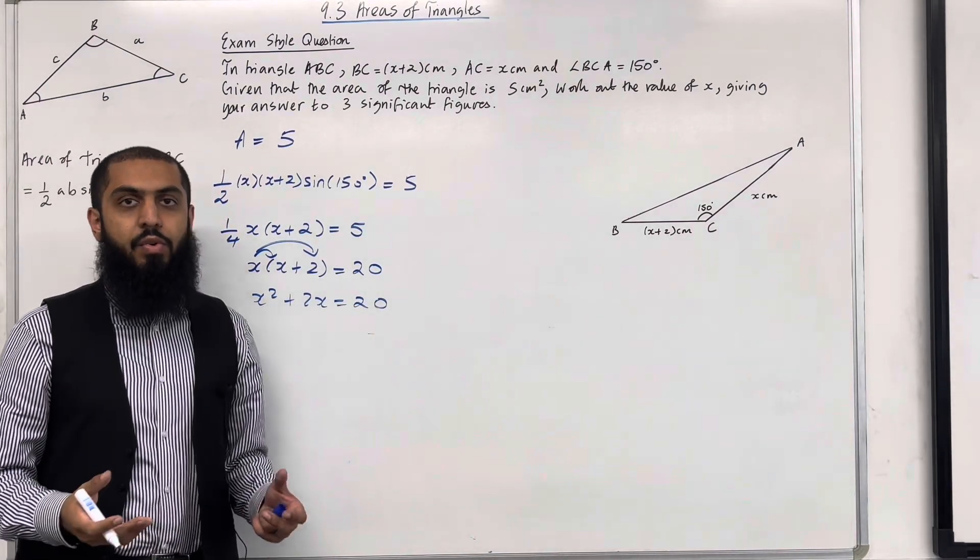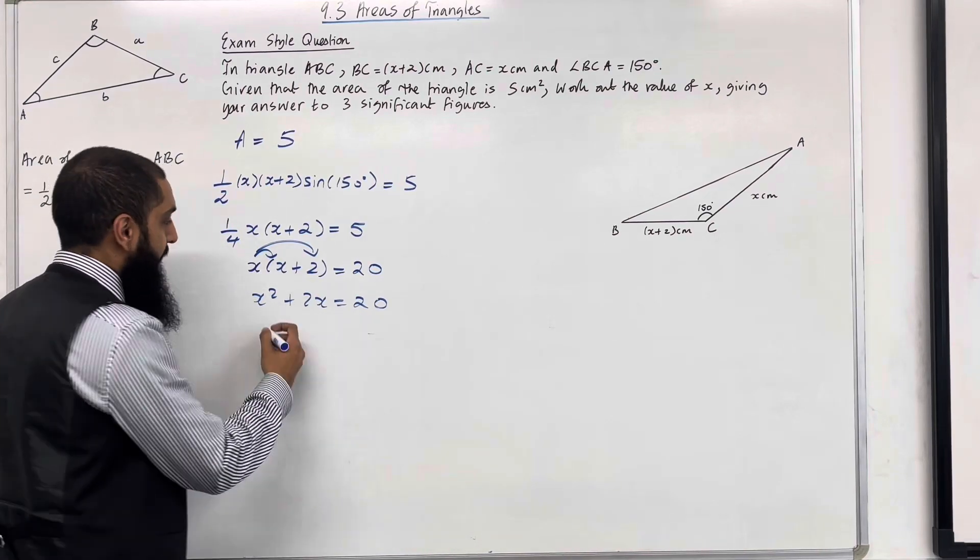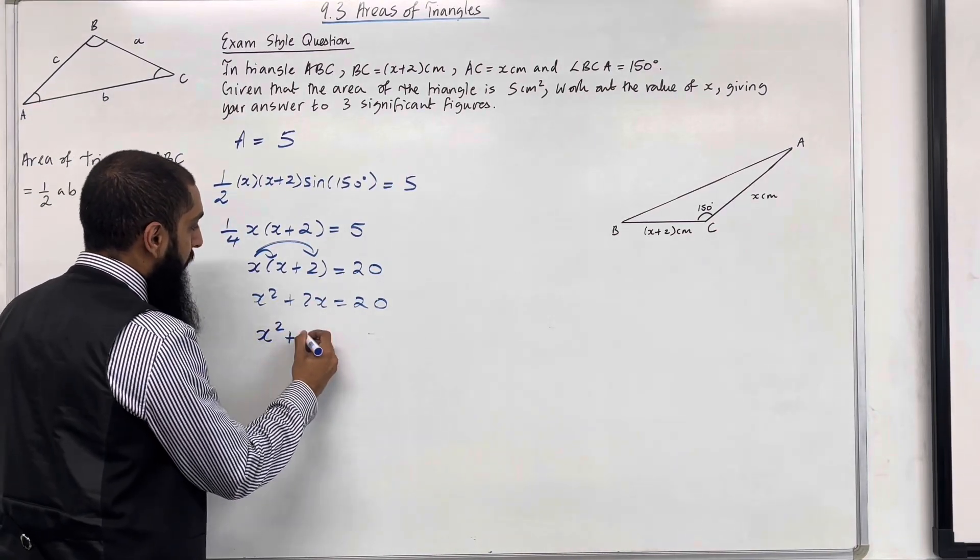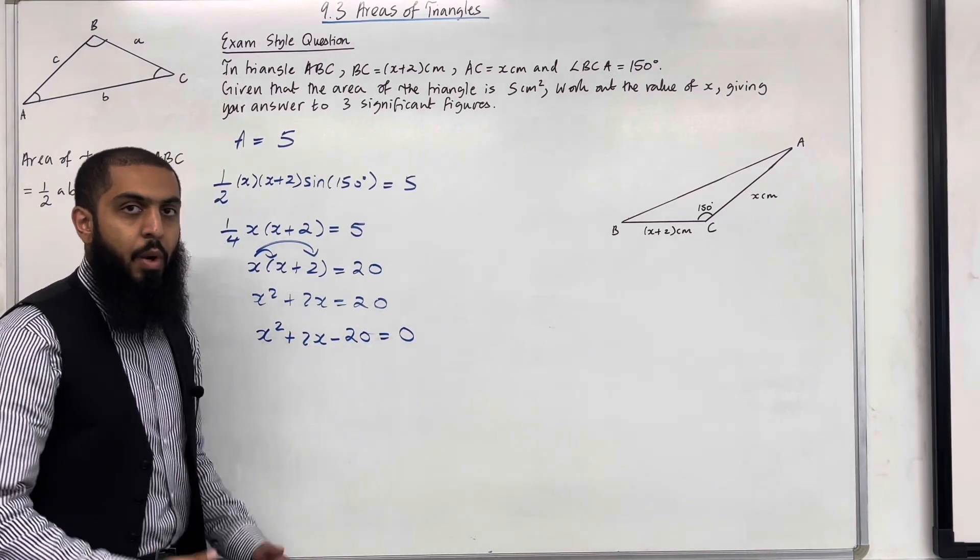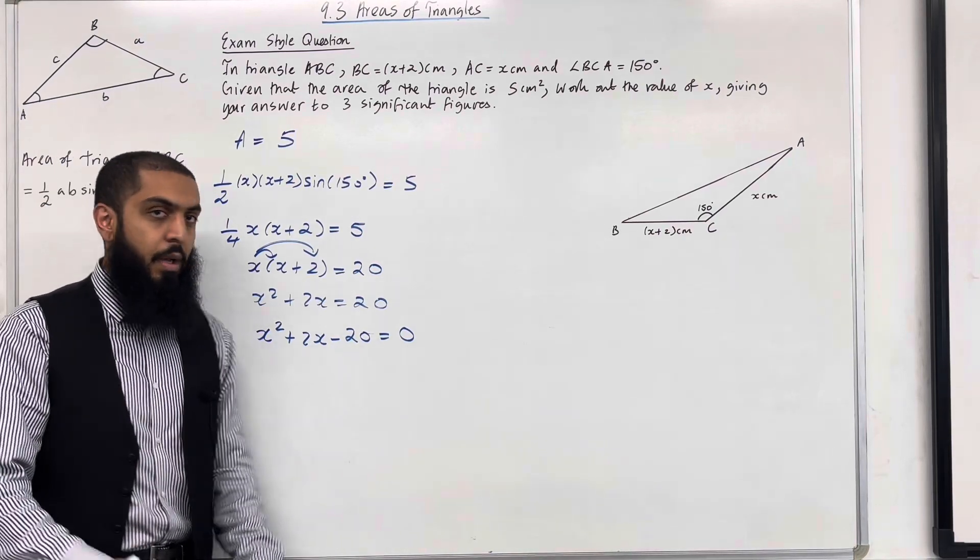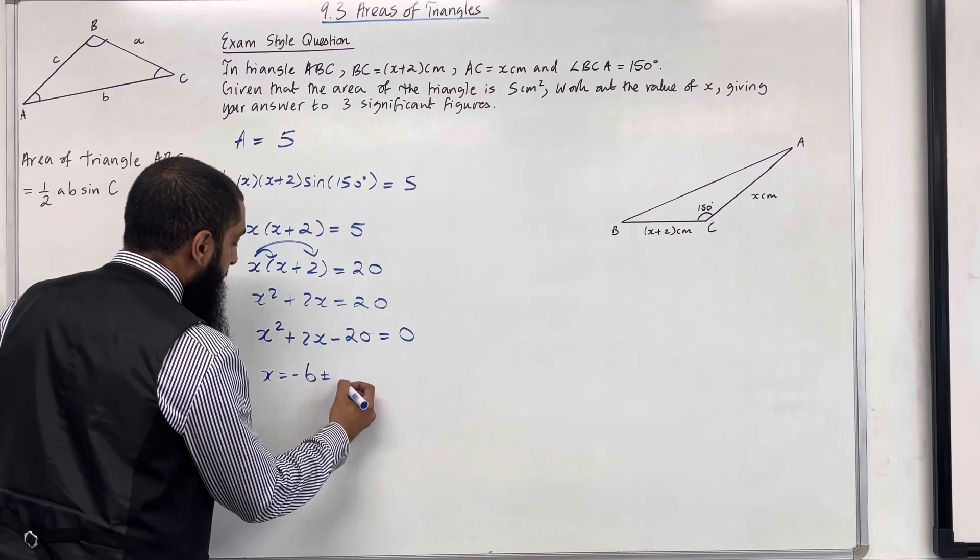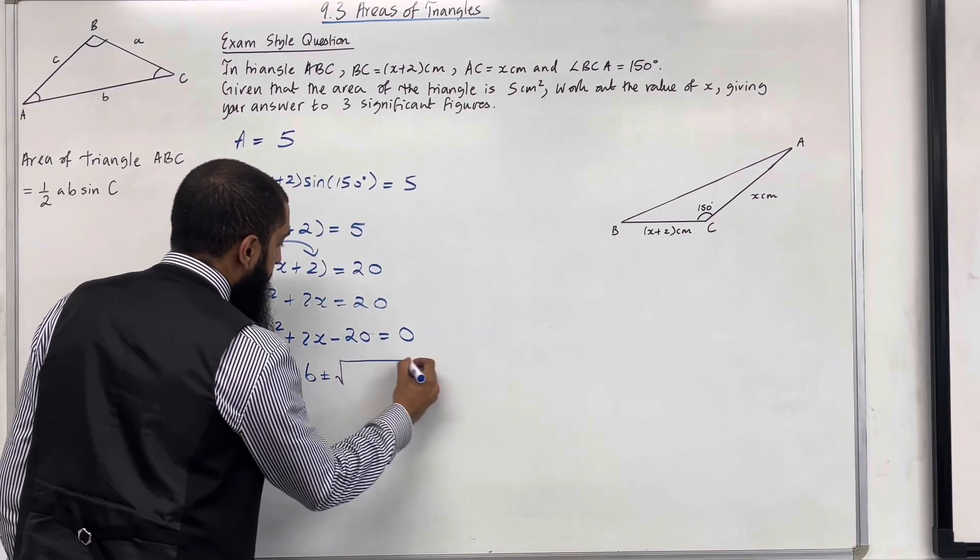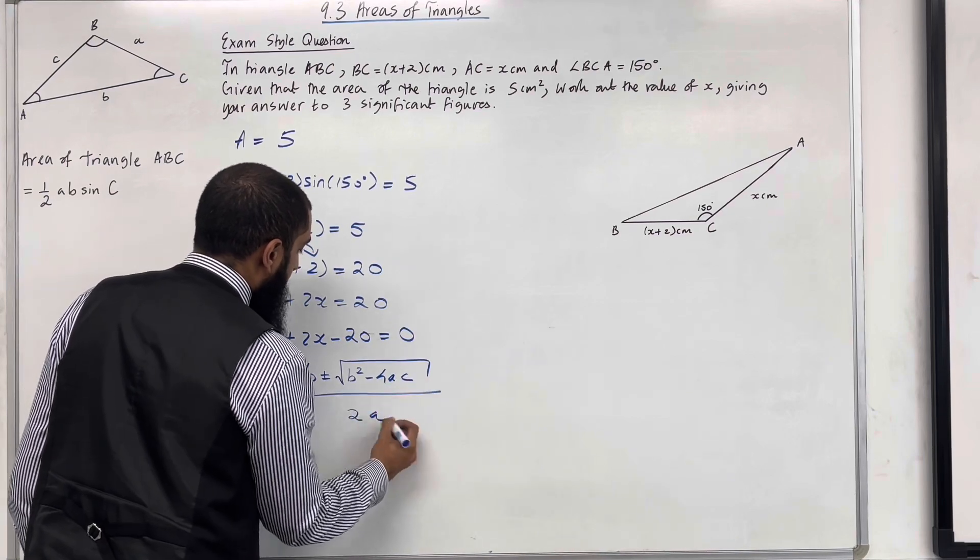We have created a quadratic equation. Now we can take the 20 to the left hand side. This gives us x squared plus 2x minus 20 is equal to 0. We can solve this particular quadratic equation using the quadratic formula. So x is given by minus b plus or minus square root b squared minus 4ac all over 2a.